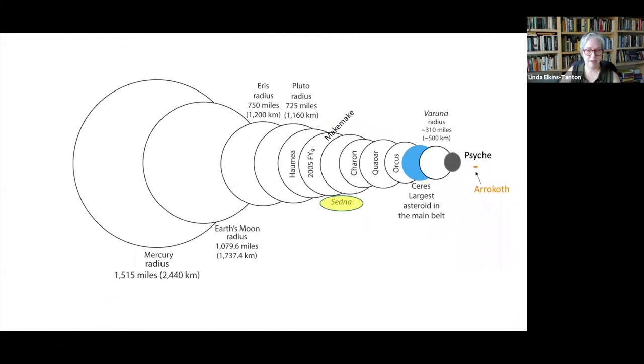This figure gives you some idea of the sizes of the objects we're talking about. Starting on the left is the planet Mercury, Earth, Moon, and then if you keep counting, Eris, and then Pluto, Haumea, this body called Makemake, those are all Kuiper Belt objects. The one in yellow, Sedna, is not. It's from further out than the Kuiper Belt, and that's what we'll talk about in a moment. Then Charon, Quaoar, Orcus, all from the Kuiper Belt. Ceres, the largest asteroid in the main belt. Varuna is a Kuiper Belt object. Then there's Psyche, there for size, my favorite asteroid, and little tiny Arrokoth that was just visited in the Kuiper Belt. That gives you a sense of the size of things.